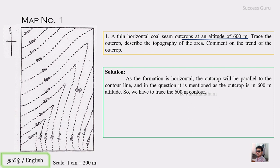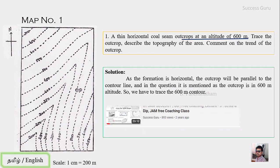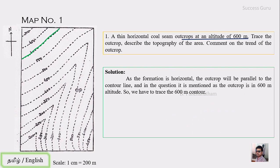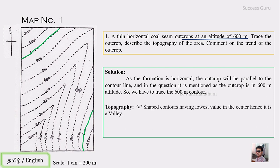That 600-meter contour will be the trace of the outcrop. If you have any doubt, you can cross-check our previous video which discussed this type of outcrop pattern and the relationship of the outcrop to the topography — I will share that link in the description. So we simply trace the 600-meter contour, and that solves the first question. This is how the horizontal formation has to be traced.